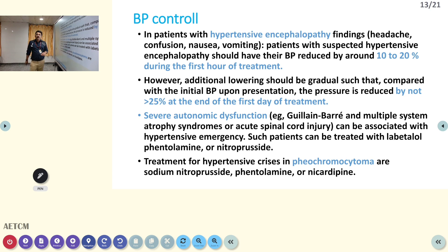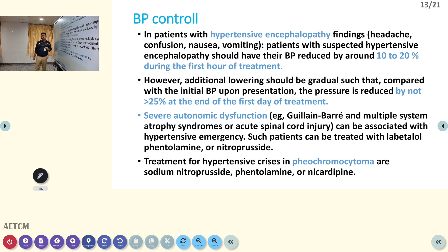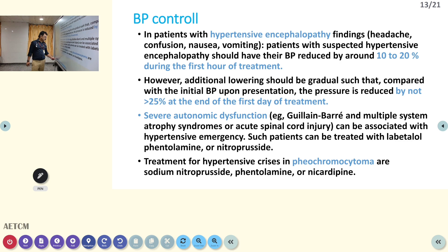Labetalol is one of the best drugs for the emergency room nowadays. In almost all other conditions, labetalol can be used. Pure pheochromocytoma is one condition where we should not use a beta blocker as a first-line drug. For pheochromocytoma, both tachycardia and high BP should be controlled with sodium nitroprusside, phentolamine, or nicardipine. Using a beta blocker can produce unopposed alpha action and BP or heart rate can increase — we have to be very careful.